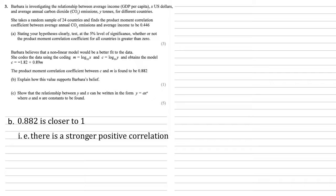For part c, we need to show that the relationship between y and x can be written in the form y equals ax to the n, where a and n are constants to be found. So we're going to substitute our log values for m and c into Barbara's model.